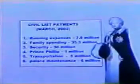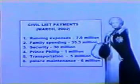What is the cost to British taxpayers to support the Queen and her entourage? The Public Accounts Committee and National Audit Office are forbidden to examine Queen Elizabeth Windsor's family finances. However, Civil List payments are reviewed every ten years. For the year ended March 2002, the running expenses of the Windsor household were £7.9 million, family spending £35.3 million, security £30 million, and the list goes on.